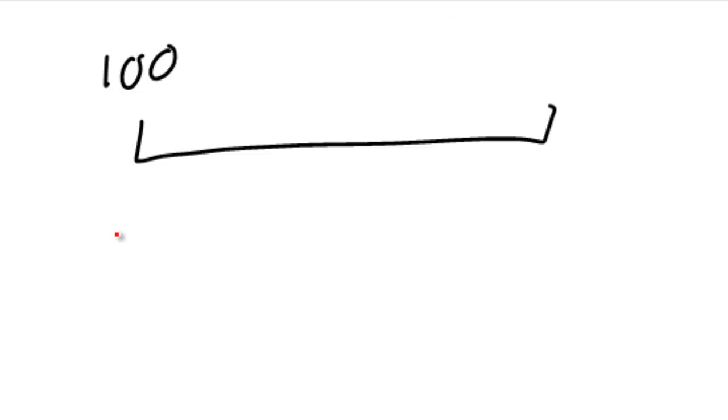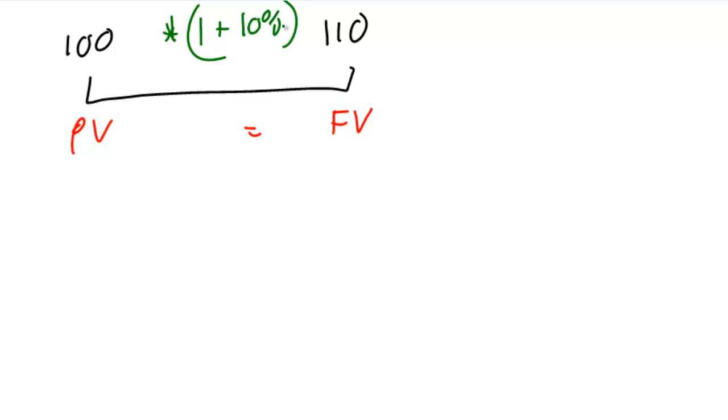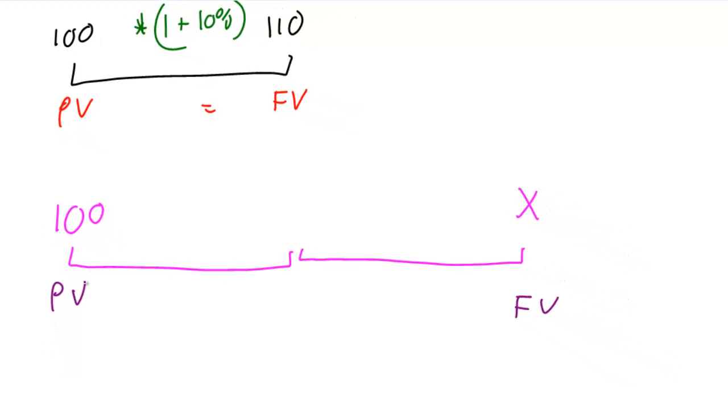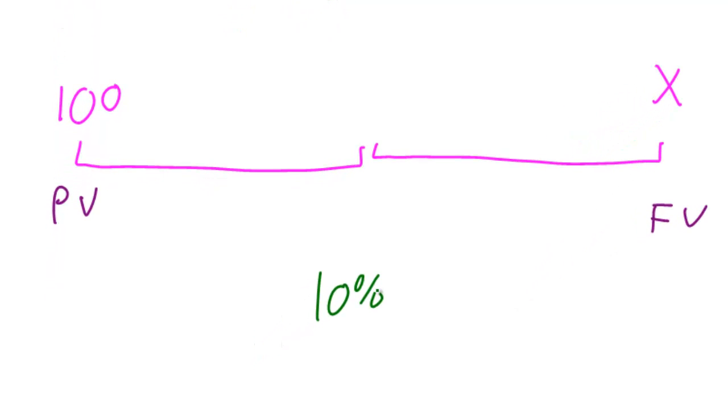Now we can move on to the full time value of money diagram. 100 today, present value, is equal to 110 in the future. Given this time function of the interest rate, the thing that's between them is multiplied by 1 plus 10%. We can divide going from right to left and we multiply going left to right. What about two years? Let's find out what some value is in two years which is equal to the 100 today.